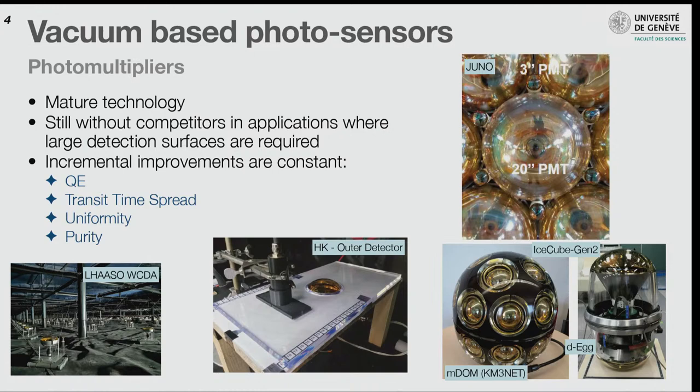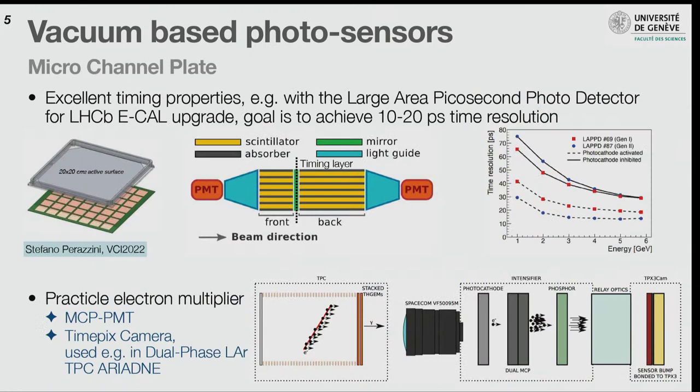You have all these detectors which require a great surface to be covered — here you see the LASSO water Cherenkov detector array, a massive pool for cosmic ray detection. Here is a glance at what will be the Hyper-K outer detector. PMTs are not big enough; we need to add wavelength-shifting tiles to increase the size. There is still R&D, mostly incremental — improving quantum efficiency and transit time spread, especially at large sizes.